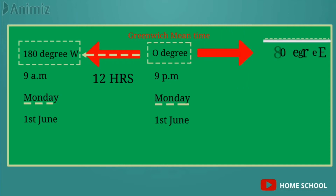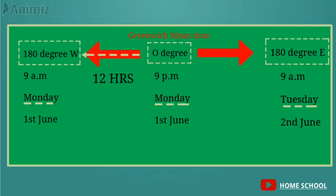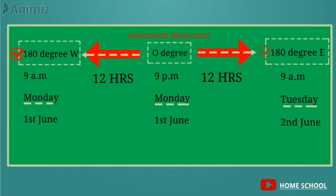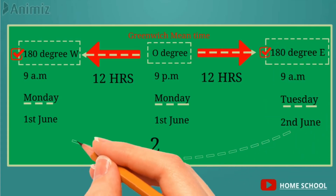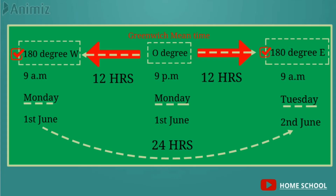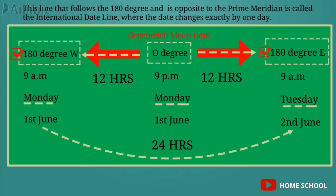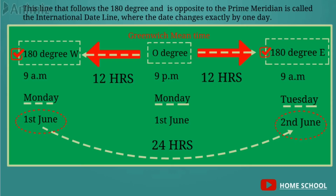Now moving towards the east: the time at 180 degree east is 9 am and the day is Tuesday, 2nd June. From zero degree to 180 degree east, the time has advanced by 12 hours. So this 180 degree meridian experiences a total difference of 24 hours on its two sides. This line, which follows the 180 degree meridian and is opposite to the prime meridian, is called the international date line, where the date changes exactly by one day.